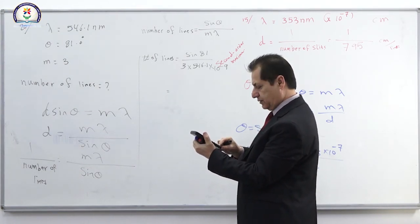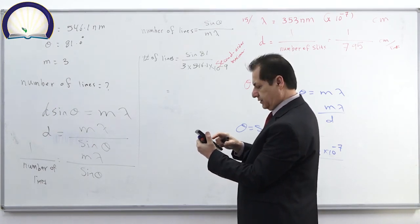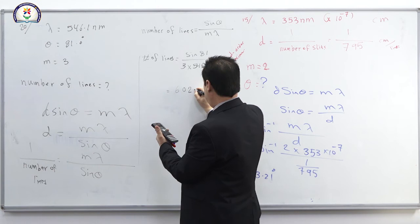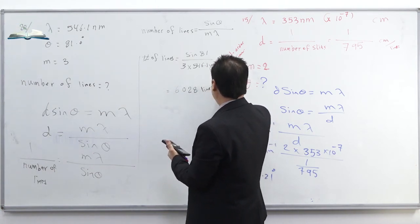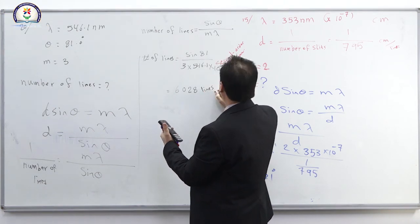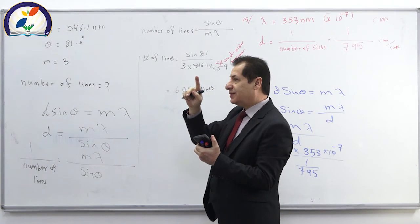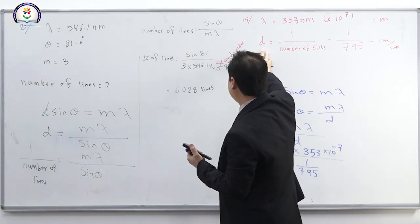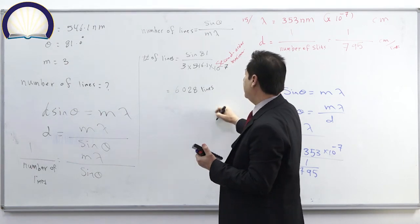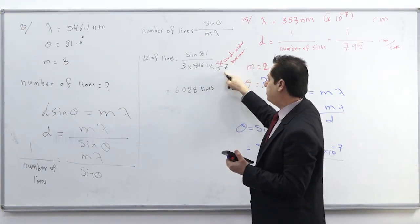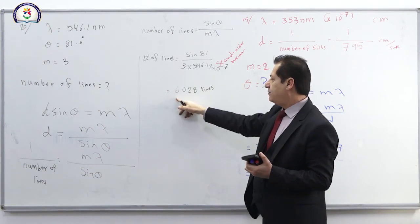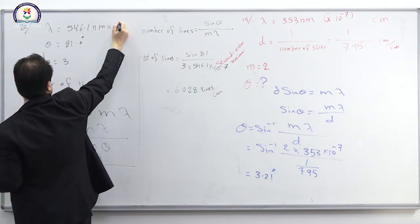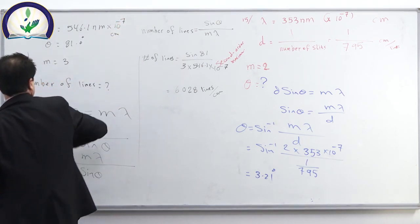Calculate: number of lines = sin(81°) / (3 × 546.1 × 10⁻⁷ cm) = 6,028 lines per centimeter. Be careful with units — convert λ to centimeters by multiplying by 10⁻⁷ so that the answer is in lines per centimeter.